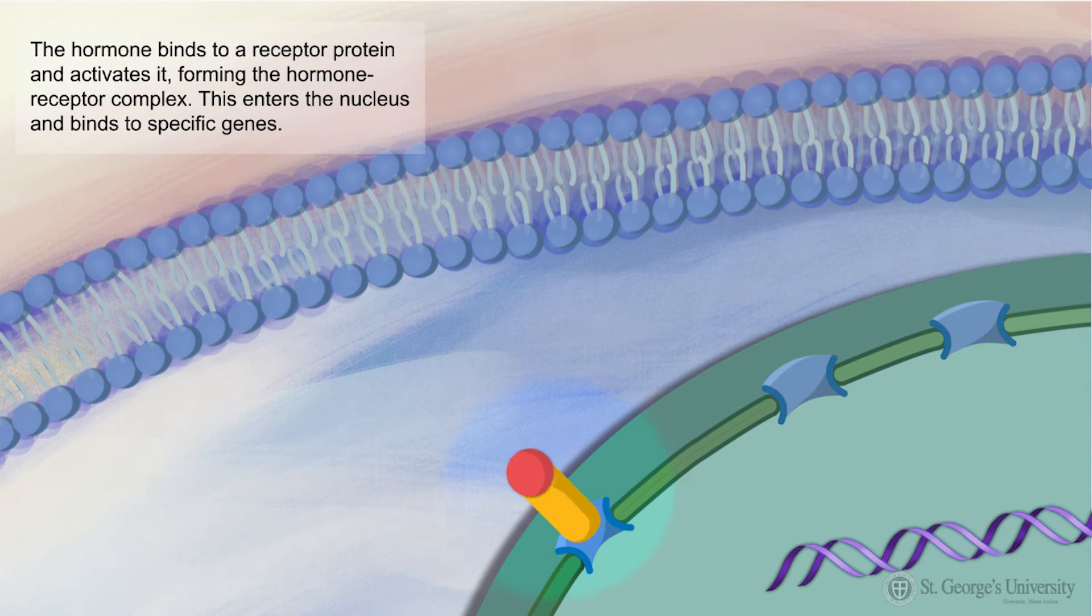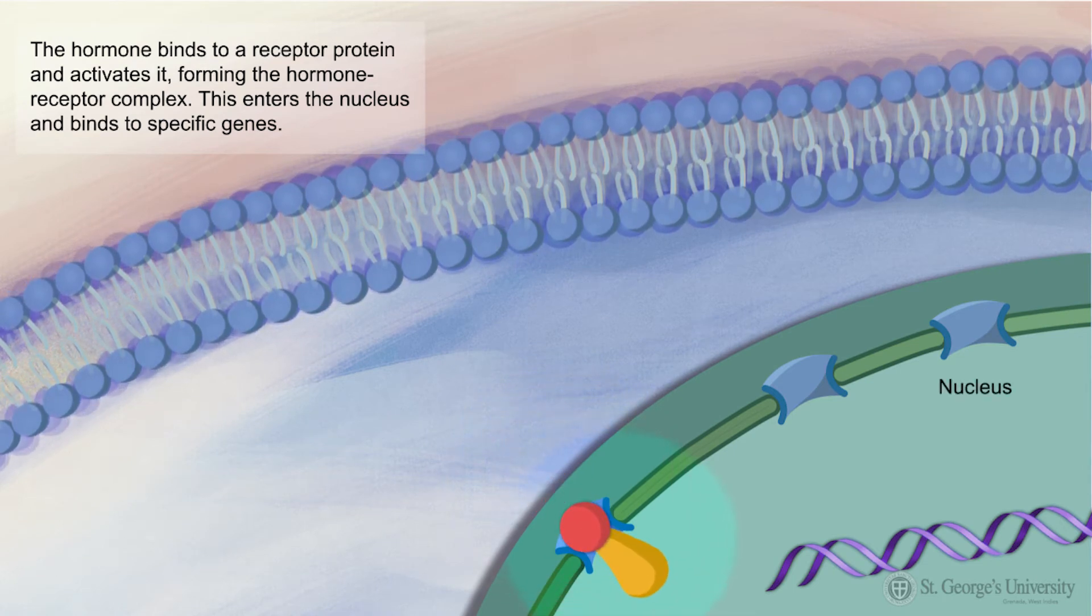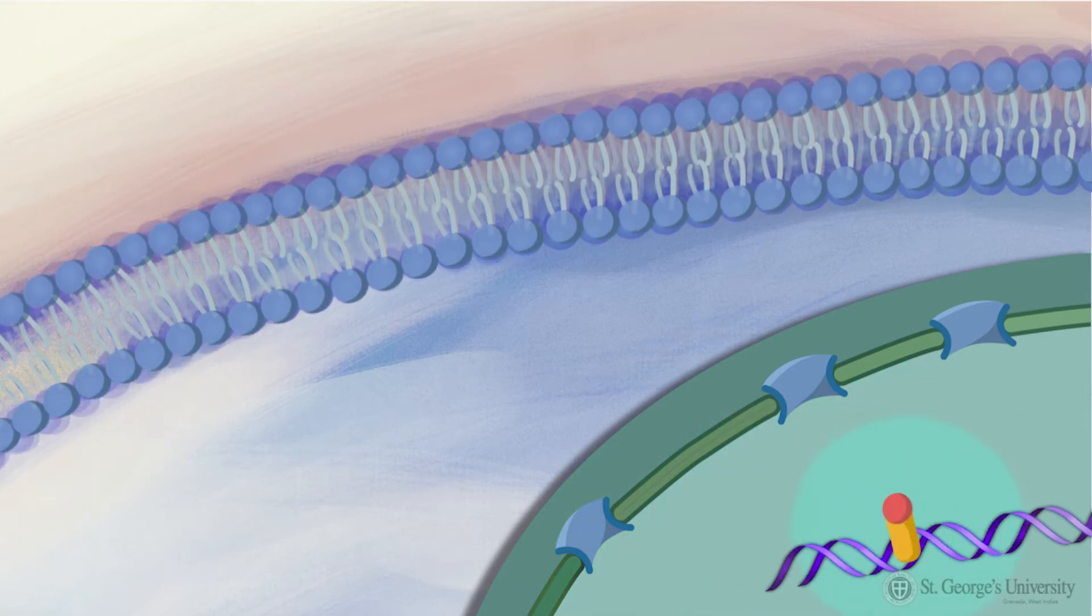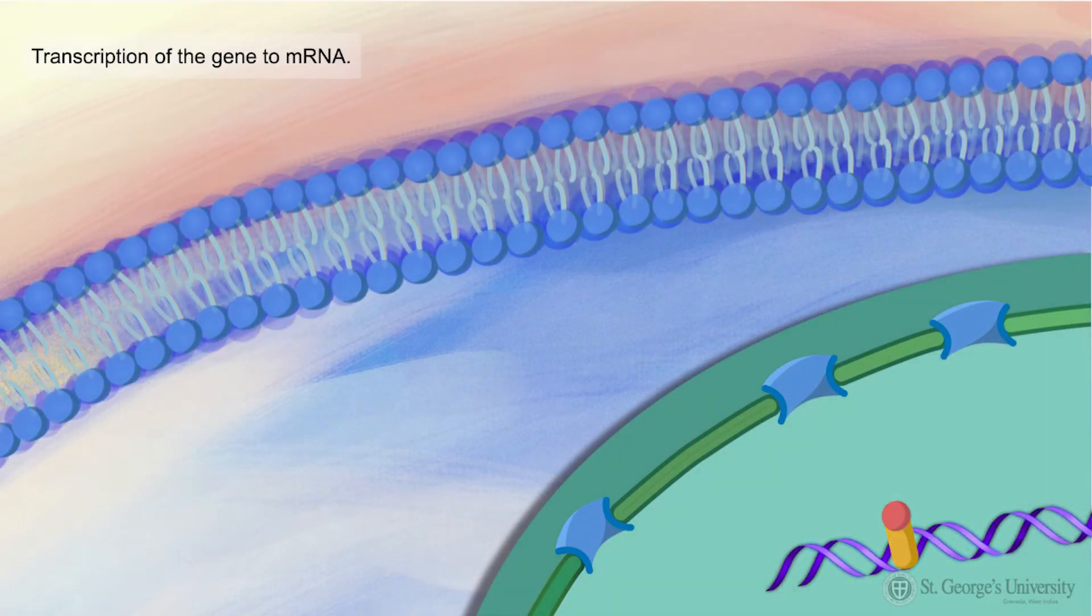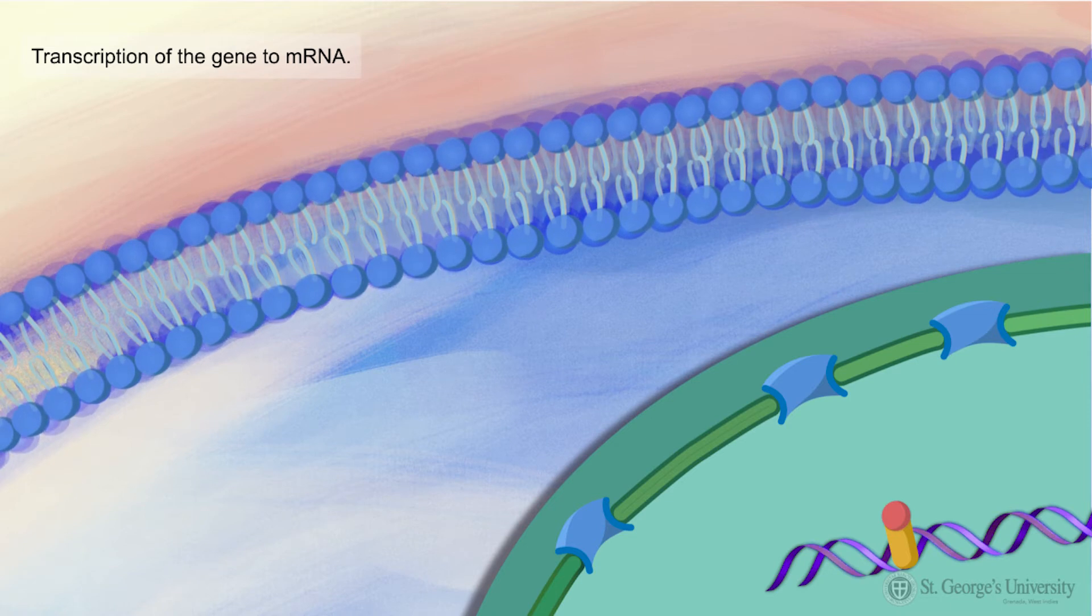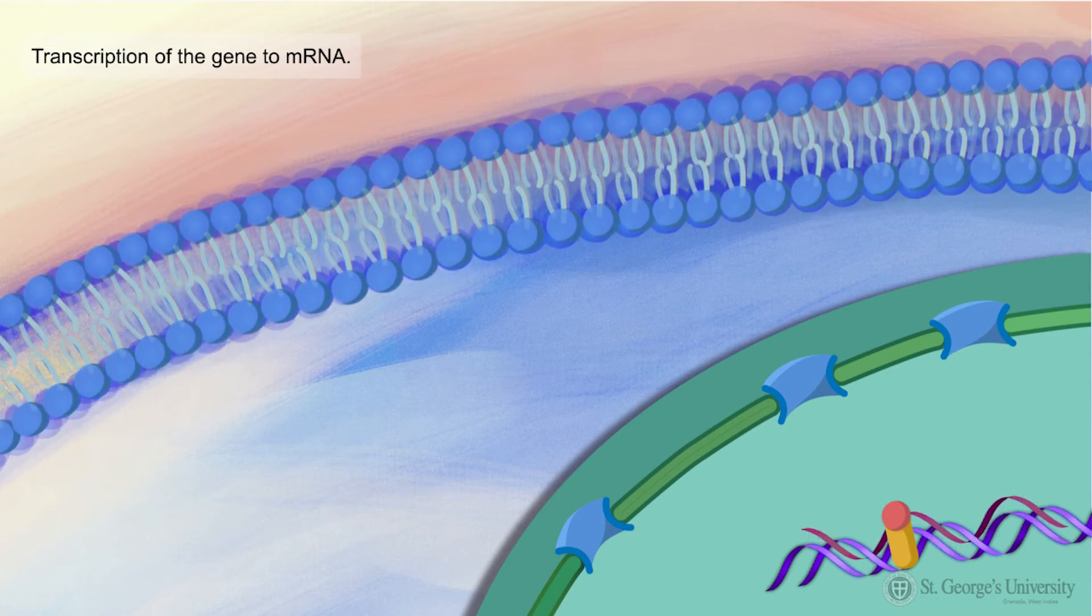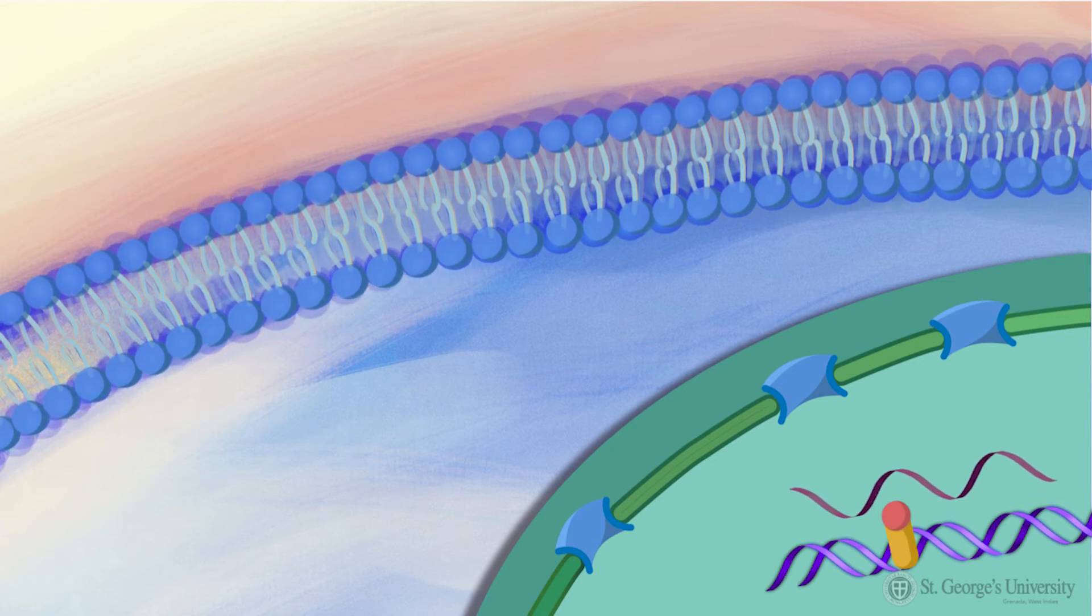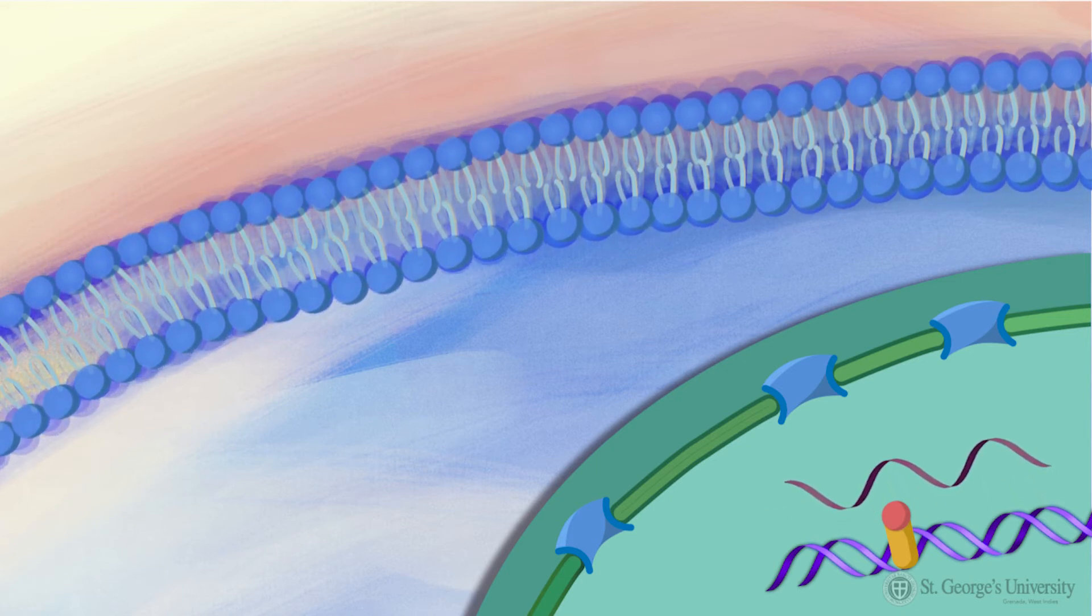This complex then enters the nucleus and binds to specific genes. This binding initiates transcription of the gene to messenger RNA, mRNA. So, the messenger RNA is transcribed from a DNA template.